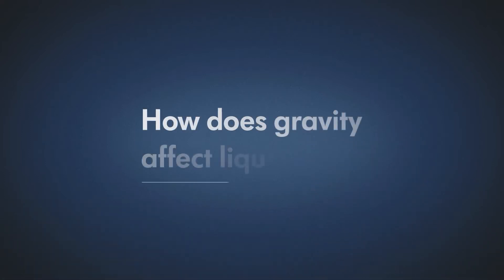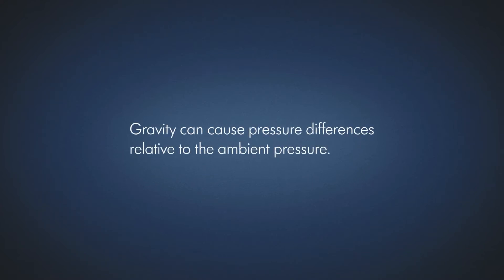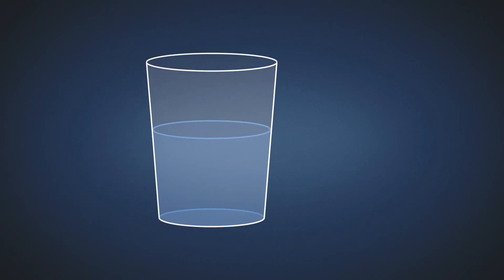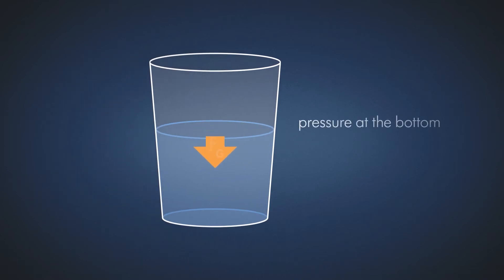How does gravity affect liquids? Gravity can cause pressure differences relative to the ambient pressure. In a glass filled with water, the pressure at the bottom of the glass is higher than the ambient pressure due to the weight of the water.